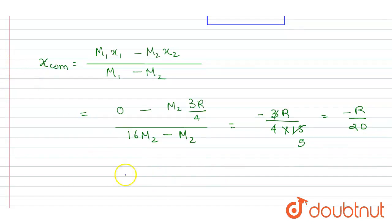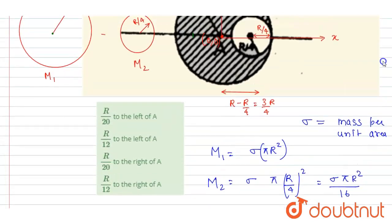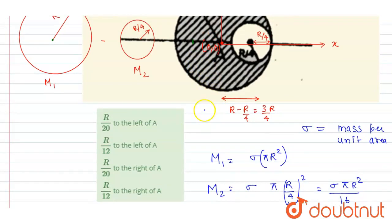So x coordinate here will be minus R by 20 comma 0. If you see here, it is negative sign, so it will be on the left of it. And this distance is R by 20. So R by 20 to the left of A. So A here will be the correct option.